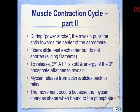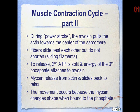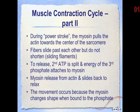To release from the actin and relax, a second ATP is split, with the energy of the third phosphate again being attached to the myosin. Myosin releases from the actin and slides back to its original position. This movement occurs because the myosin changes shape when bound to the phosphate. It does take energy for both the muscle to contract and for the muscle to relax.